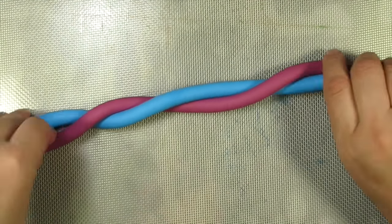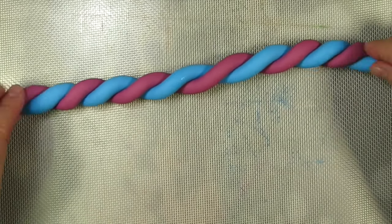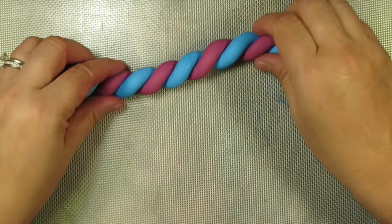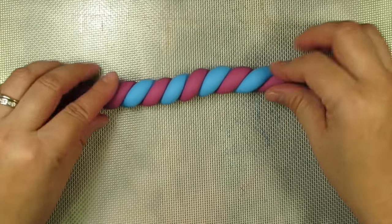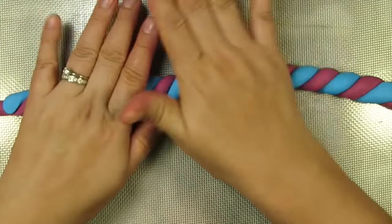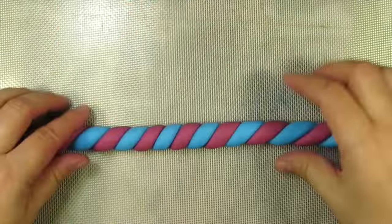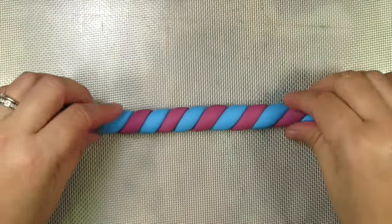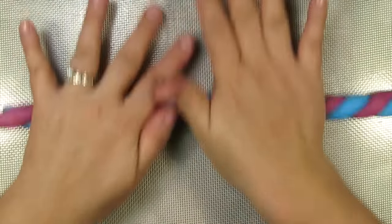This next technique is a lot of fun. I'm simply going to twist these two colors together, moving my fingers in opposite directions and squeezing really tight and twisting until I feel that everything's nice and stuck together. Give it a nice little roll to make sure it's not going to open up on you.